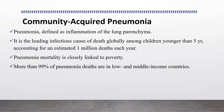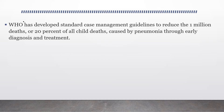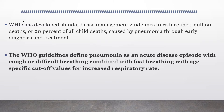Pneumonia mortality is closely linked to poverty, and more than 99% of pneumonia deaths are in low and middle income countries. WHO has developed standard case management guidelines to reduce the 1 million deaths — or 20% of all childhood diseases caused by pneumonia — through early diagnosis and treatment. It defines pneumonia as an acute disease with cough or difficult breathing combined with fast breathing, with age-specific cut-off values for increased respiratory rate.